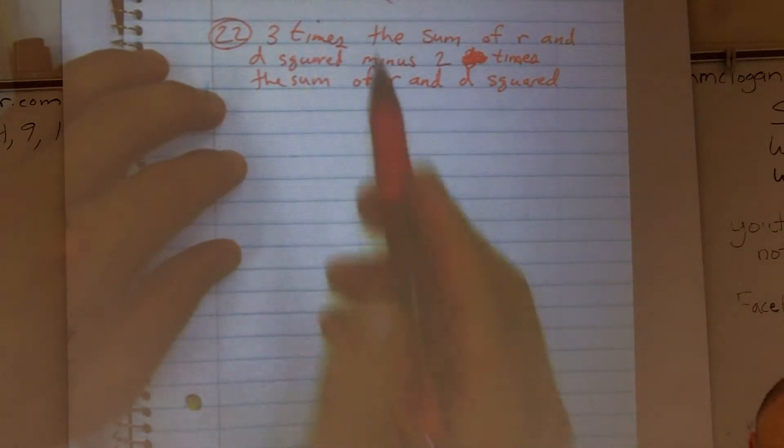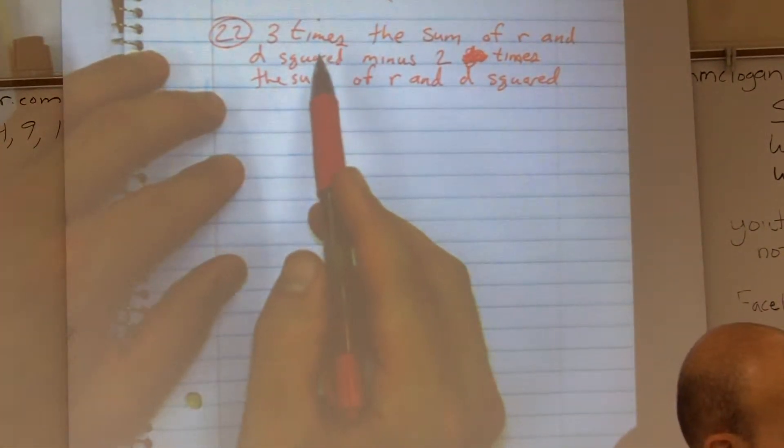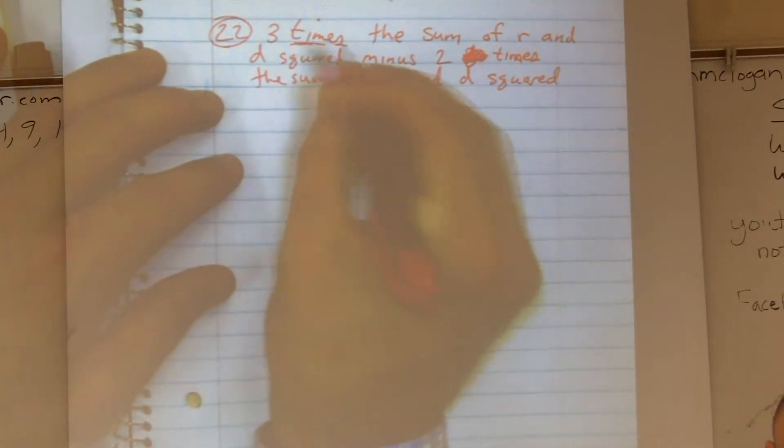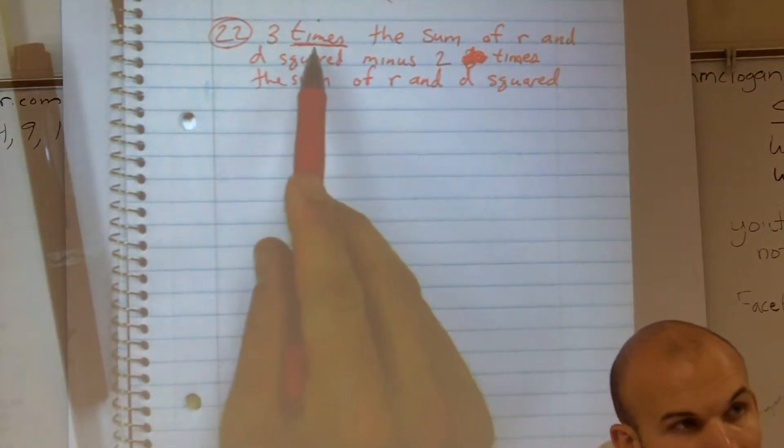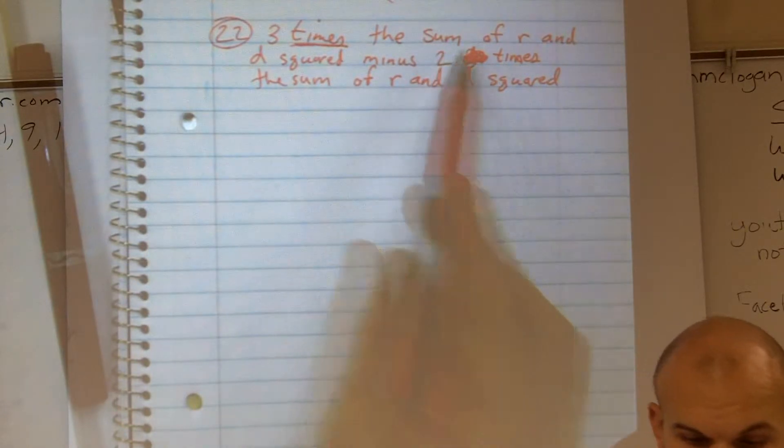So automatically looking up here, I see we have, it says three times. So therefore, I'm going to use multiplication. I'm not just going to write a multiplication, but I'm going to underline this. So I'm going to multiply three times the sum. The sum tells us to do addition.